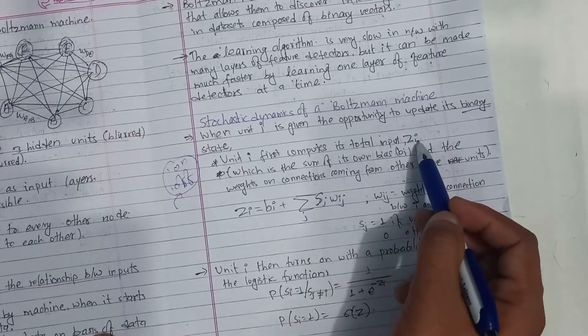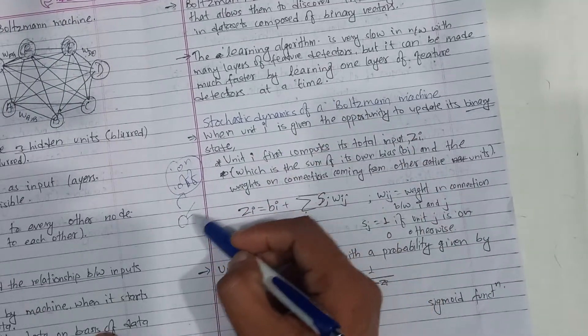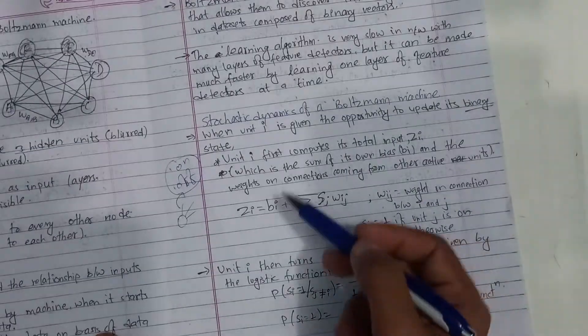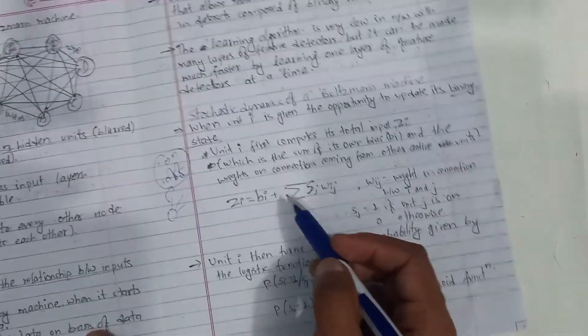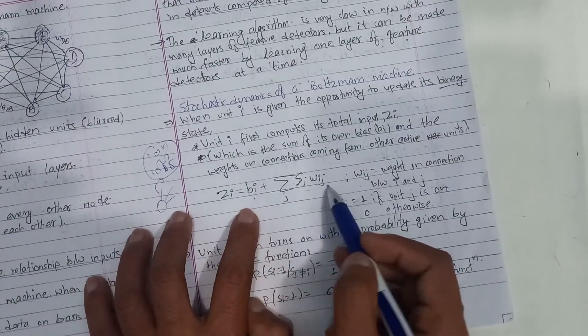Unit i first computes its total input zi. It calculates the weighted sum of the input, which is the sum of its bias and the weighted connection coming from other active units. This is the weighted sum of the connection.